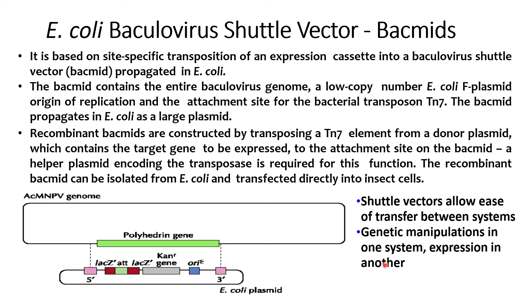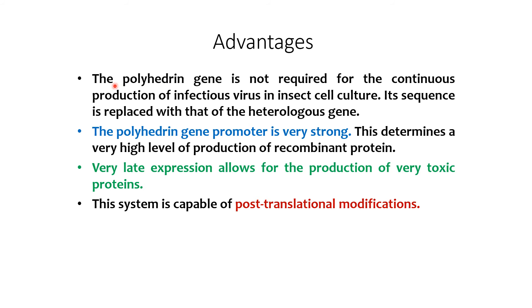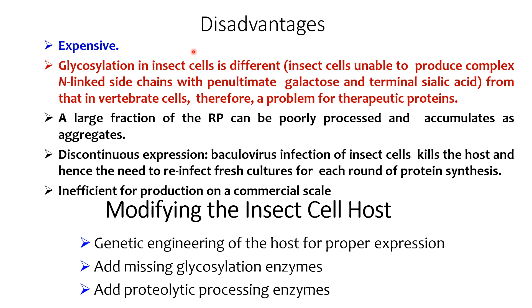The shuttle vector allows ease of transfer between systems and genetic manipulation in one system for expression in another. As advantages: the polyhedrin gene is not required for continuous production of infectious virus in insect cell lines; its sequence is replaced with that of the heterologous gene. The polyhedrin gene promoter is very strong, determining very high levels of recombinant protein production. Very late expression also allows for the production of very toxic proteins, and this system is capable of post-translational modification.